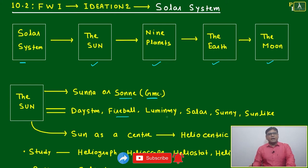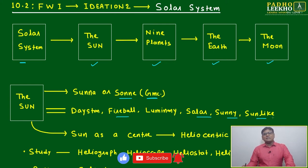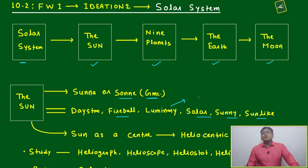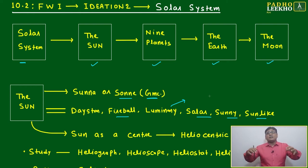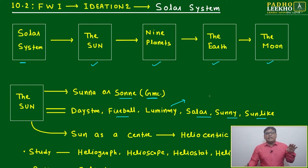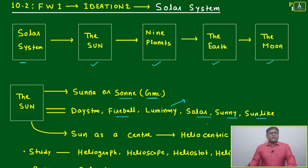For example, 'Sunil Gavaskar is a luminary personality in cricket' — meaning he is like a sun, his stature is like a sun, his level of achievement is sun-like. That is a luminary. After that, 'solar' — these are all figurative uses, not literal uses.